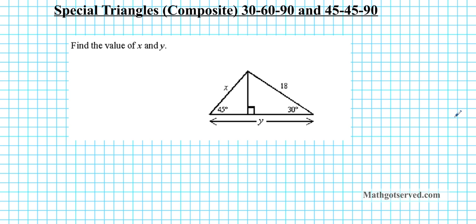Hey there students, in this clip we're going to be going over an example on special triangles. We're going to be dealing with a composite case where we have a triangle that is a combination of the two special triangles — the 30-60-90 and the 45-45-90 special triangles — as illustrated in the figure below.